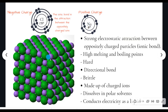The electrostatic attraction between the oppositely charged particles, also called the ionic bond, is very strong. This means it requires a high amount of energy to overcome and break that electrostatic attraction between the ions. Therefore, ionic solids have high melting points and high boiling points, which can range from the high hundreds into the thousands.